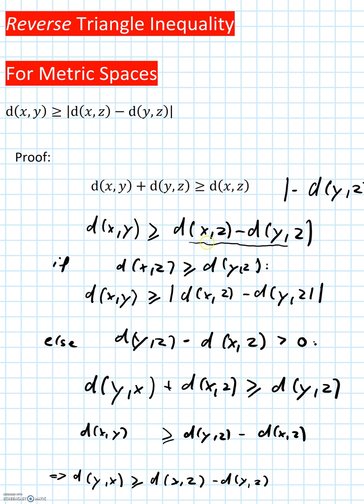We do not change anything by putting an absolute value around this expression because it is positive. So this is the same as this expression: d(x,y) is greater or equal to the absolute value of d(x,z) minus d(y,z). And this is of course what we want to show.